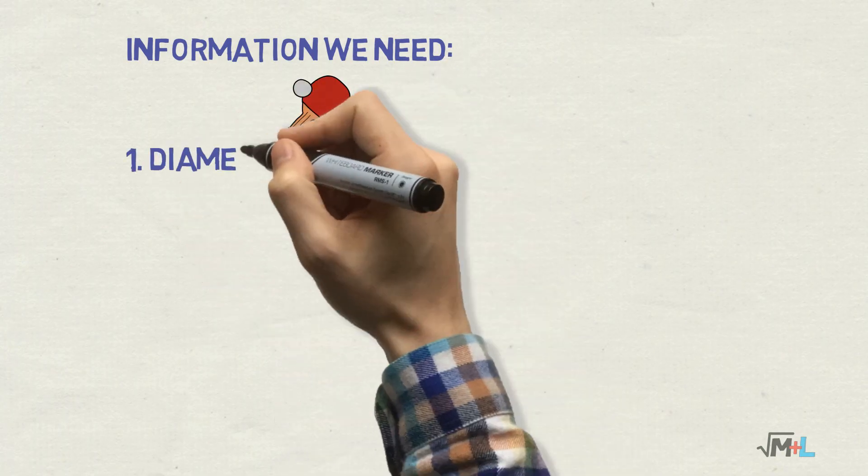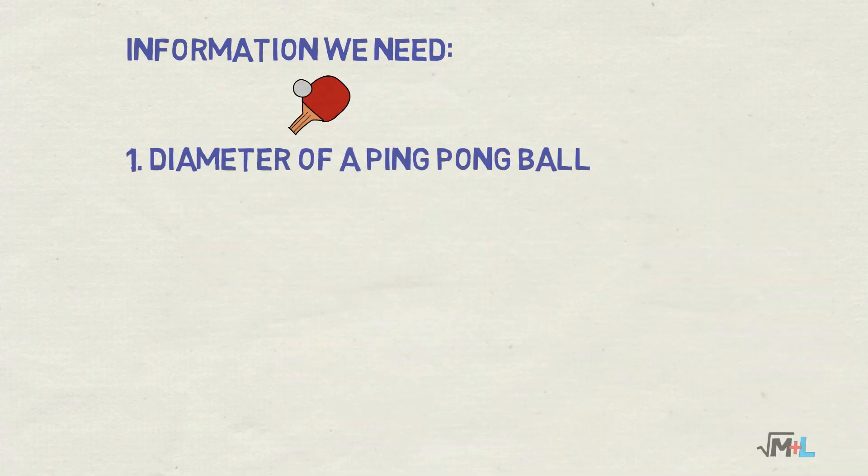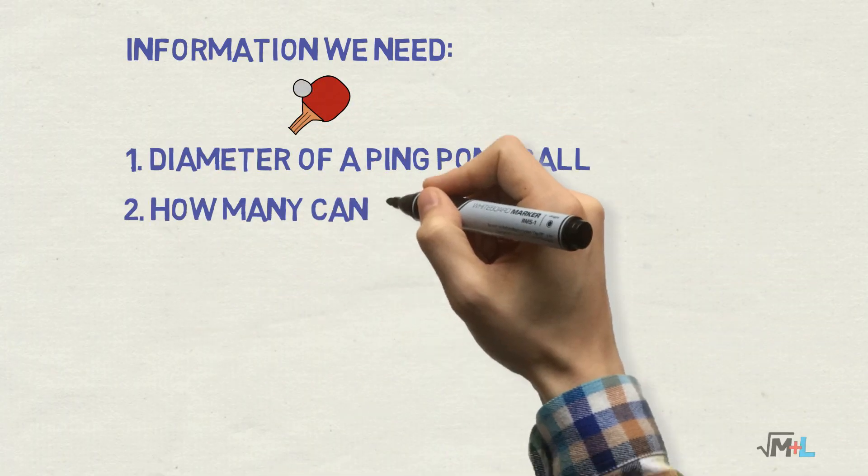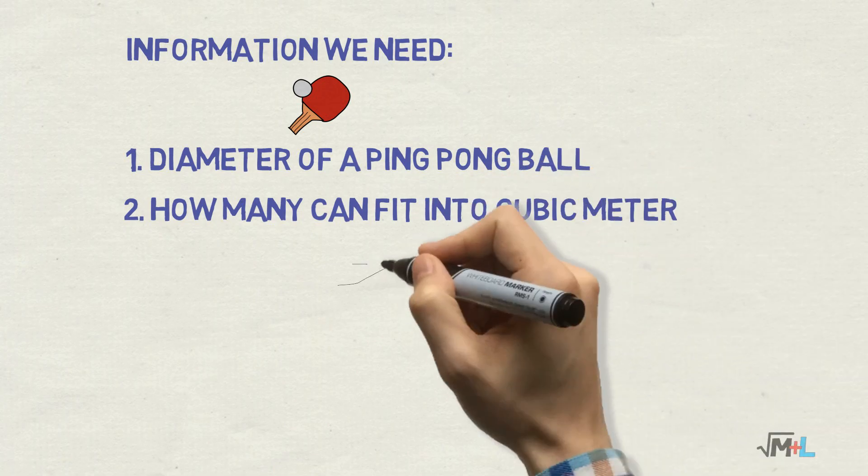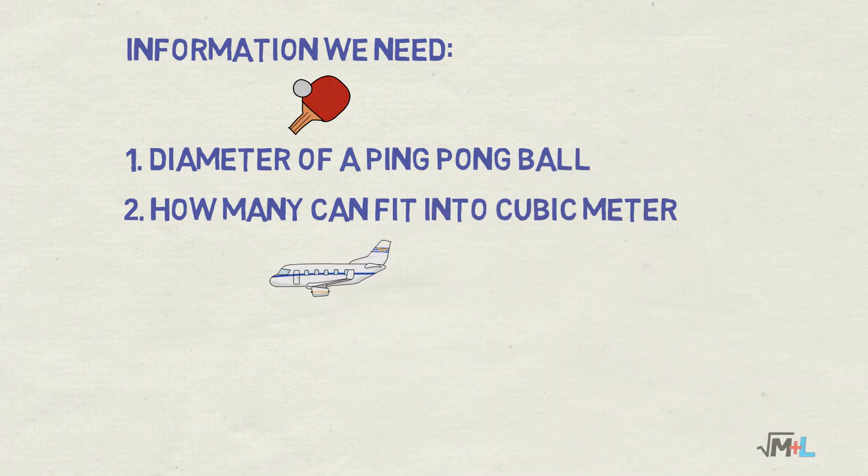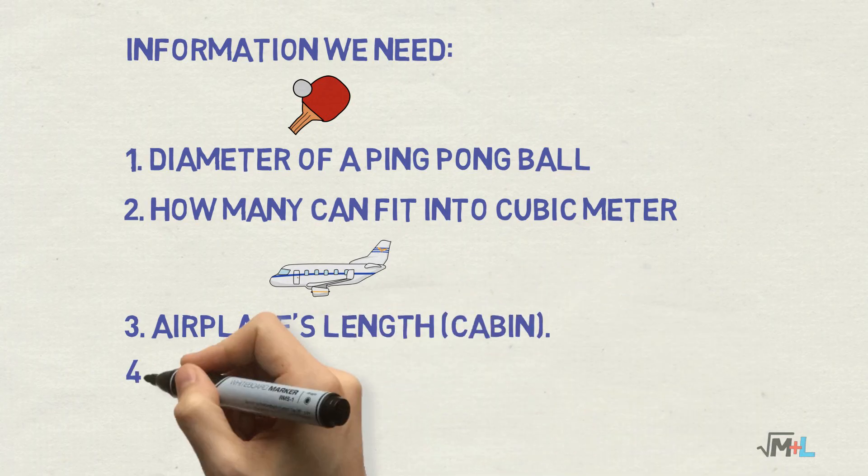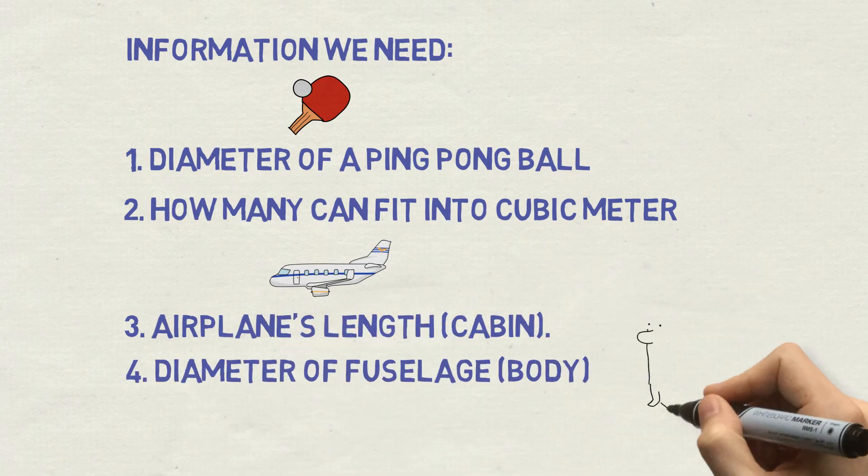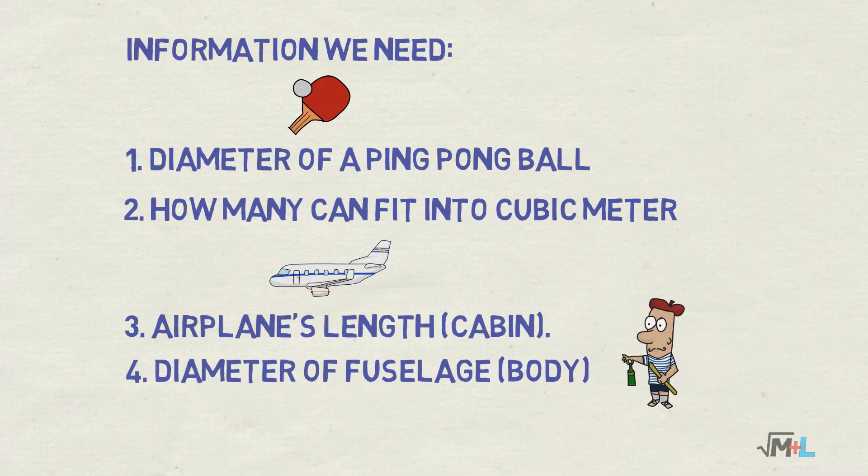This is what information we need. On the ping-pong part, diameter of the ball and this will let us estimate how many of them fit for example in cubic meter. In the second part regarding the airplane, we'll estimate the length and diameter of its body or fuselage and this will let us calculate volume of the airplane needed to calculate the final result.